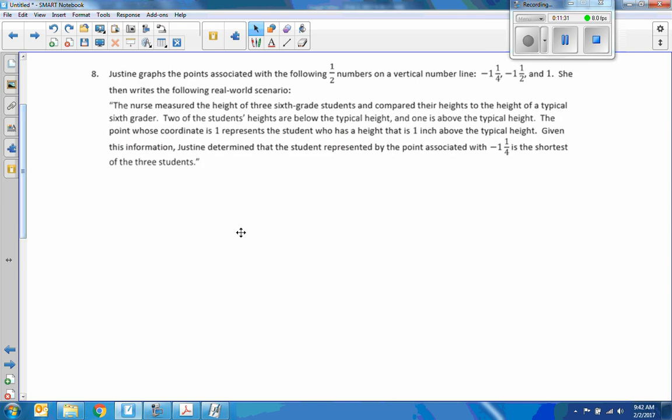Next. Justin graphs the points associated with the following numbers on a vertical number line. Negative one and a quarter. Negative one and a half. And one and a half. She then writes the following real world scenario. The nurse measured the height of three sixth grade students and compared their heights to the height of a typical sixth grader. Two of the students' heights are below the typical height and one is above the typical height. The point which coordinate is 1 represents a student who has a height that is 1 inch above the typical height. Given this information, Justin determined that the student represented by the point associated with negative one and a quarter is the shortest of the students. Agree or disagree?